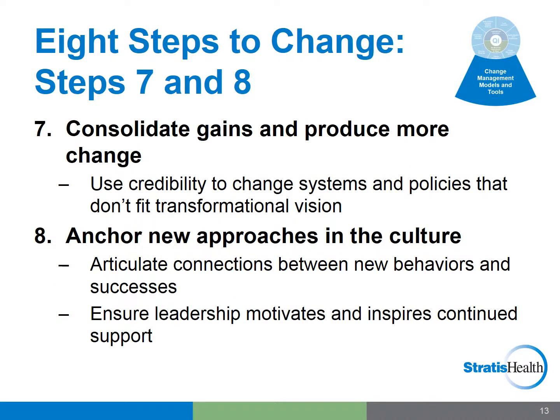Step 7 is to consolidate gains and produce more change. Use increased credibility to change systems and policies that don't fit together or fit the transformational vision. Recognize and communicate the gains achieved in your newly changed process throughout the organization, and encourage people to be open to new challenges and ready for the next change. The final step is to solidify the change or make it stick — think back to the Lewin unfreeze, change, refreeze model. Step 8 is to anchor new approaches in the culture. Articulate connections between new behaviors and success. Ensure leadership development that motivates and inspires continued support. Develop performance measures to continually monitor the results from the change implemented and to identify opportunities for new or further improvements. Revise job descriptions and develop new reward systems, embedding them in policies and procedures to help provide some permanence for the quality improvements you have achieved.